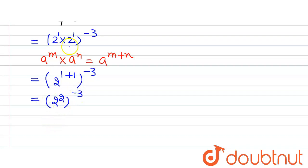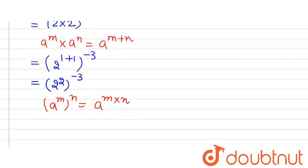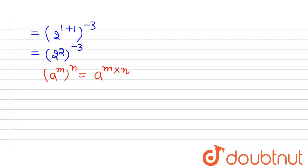Now we have a raised to the power m raised to the power n which can be written as a raised to the power m multiplied by n. So using this property we can write 2 raised to the power 2 multiplied by minus 3. Ultimately we will get 2 raised to the power minus 6 and this is our answer.